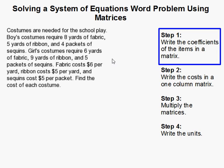Ribbon costs $5 per yard, and sequins cost $5 per packet. Find the cost of each costume.